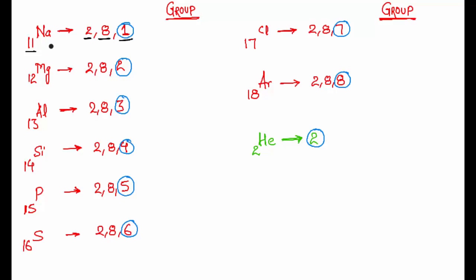Let's see a few examples. For sodium, atomic number 11, the configuration is 2, 8, 1. The valence electron is 1, so the group will be group 1.